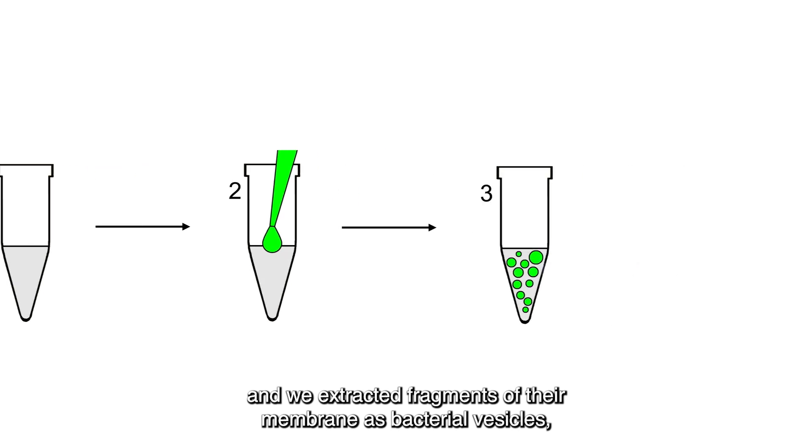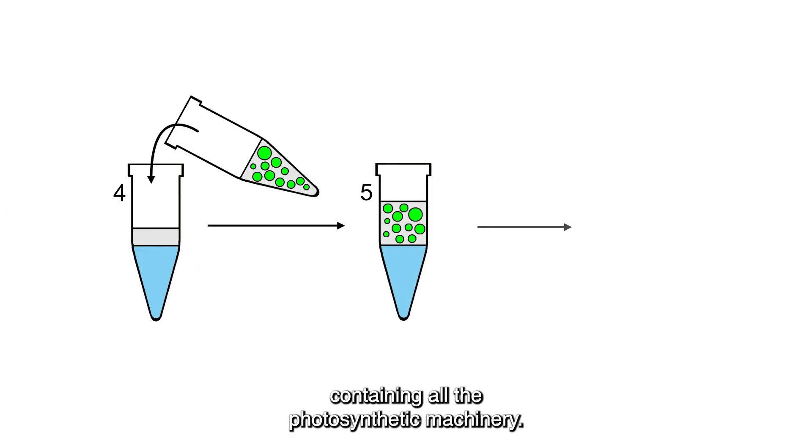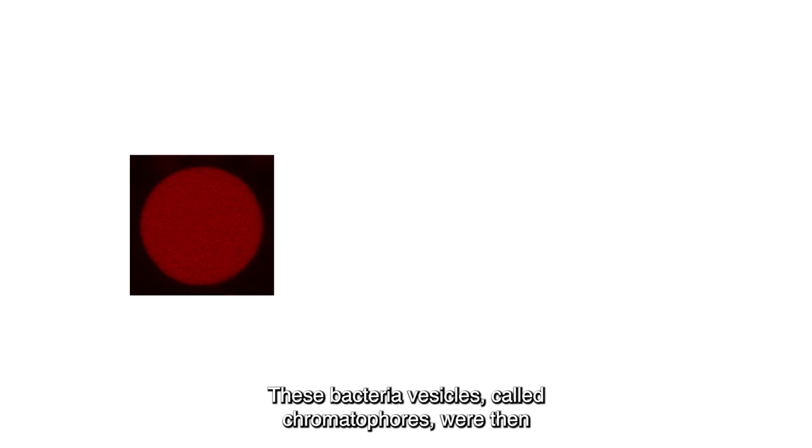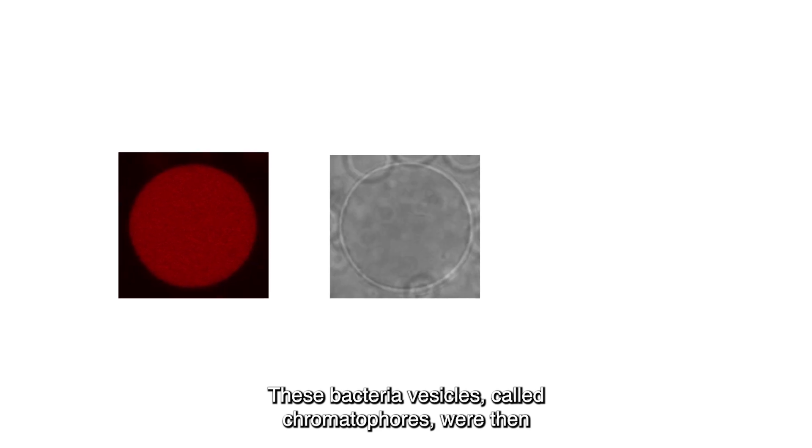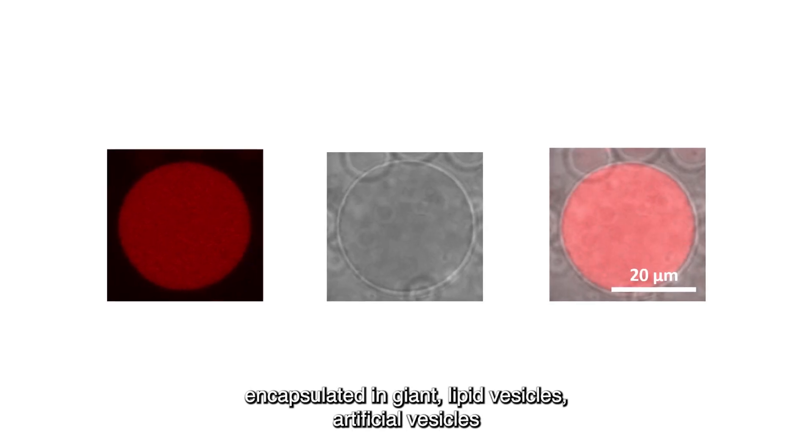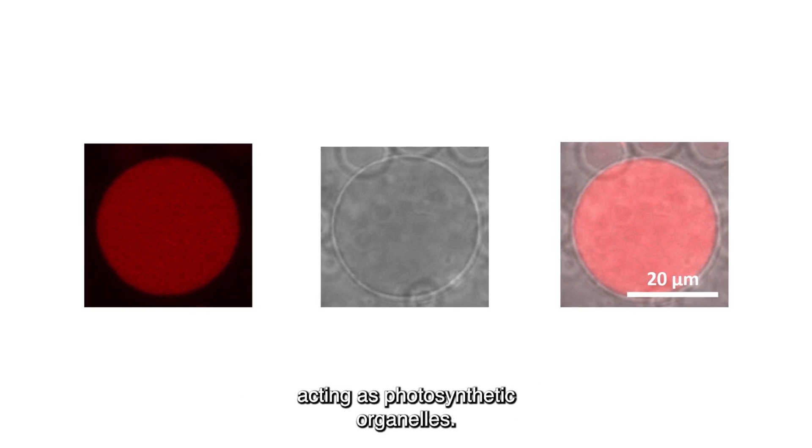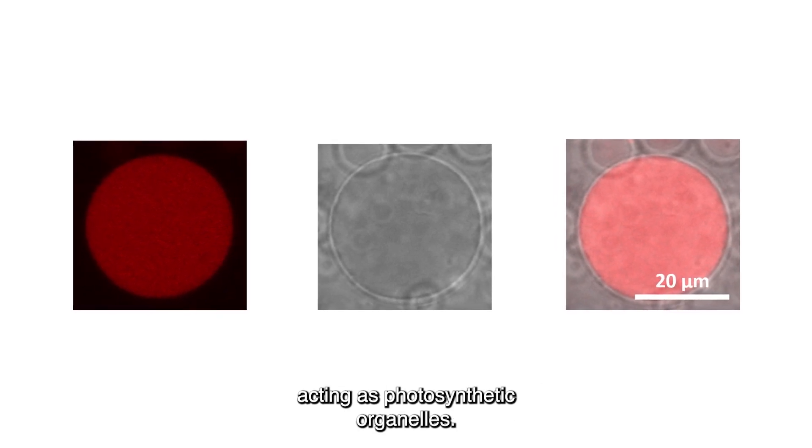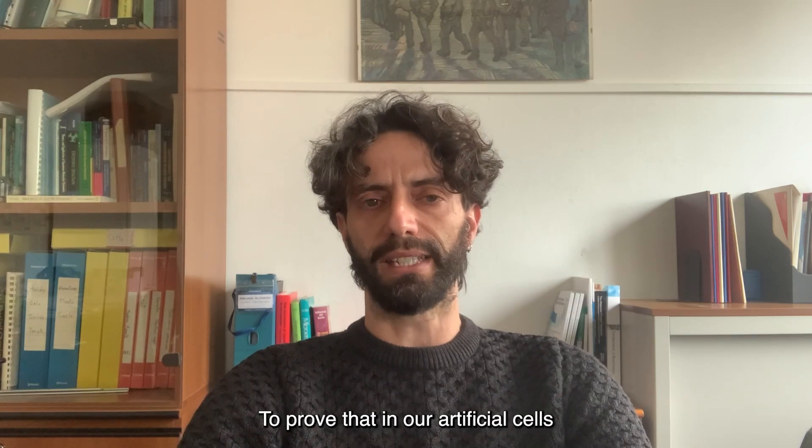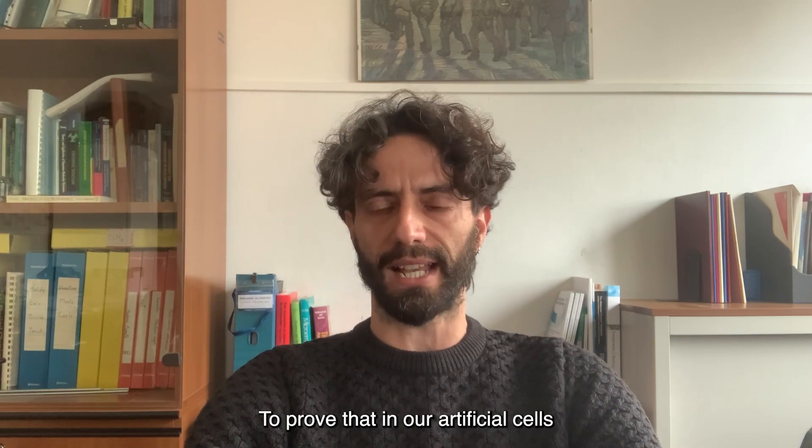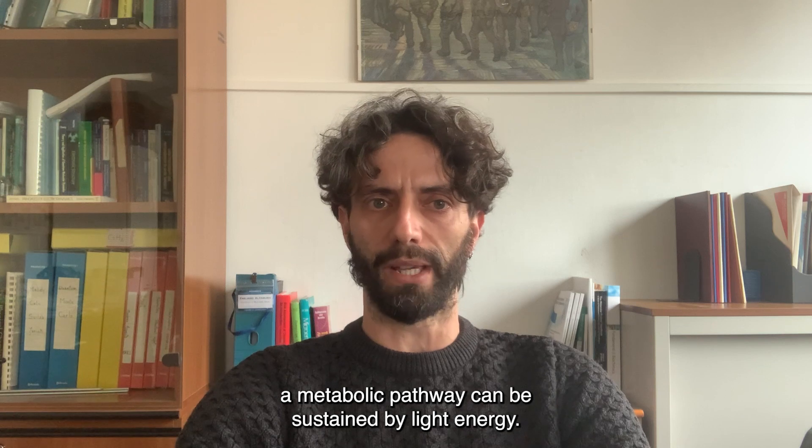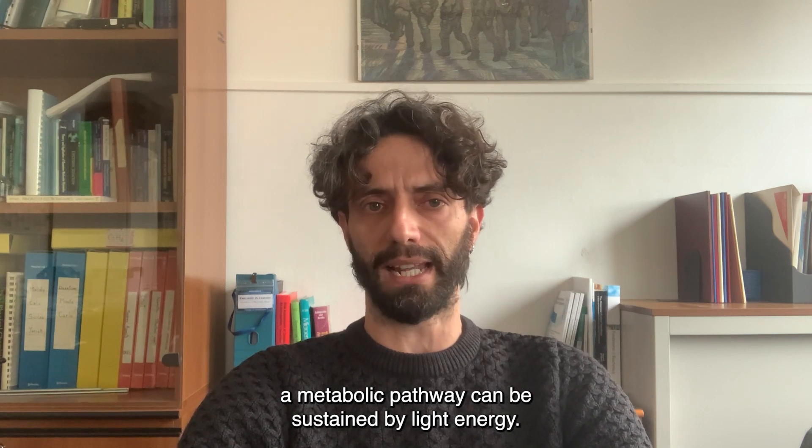These bacterial vesicles, called chromatophores, were then encapsulated in giant lipid vesicles, artificial vesicles, acting as photosynthetic organelles to prove that in our artificial cells a metabolic pathway can be sustained by light energy.